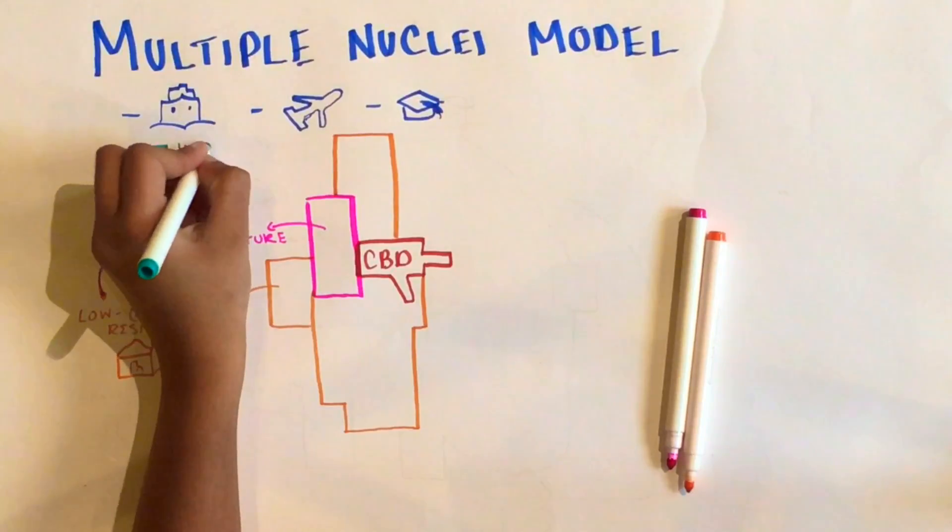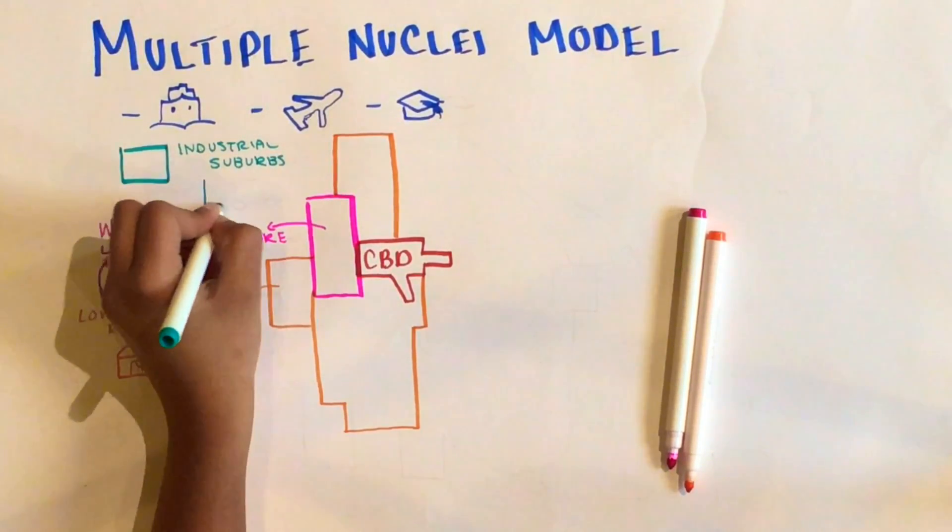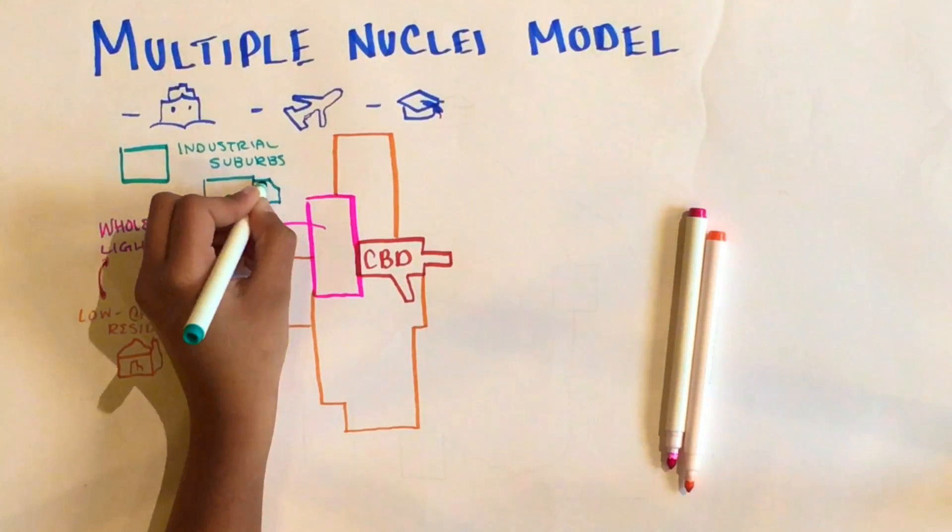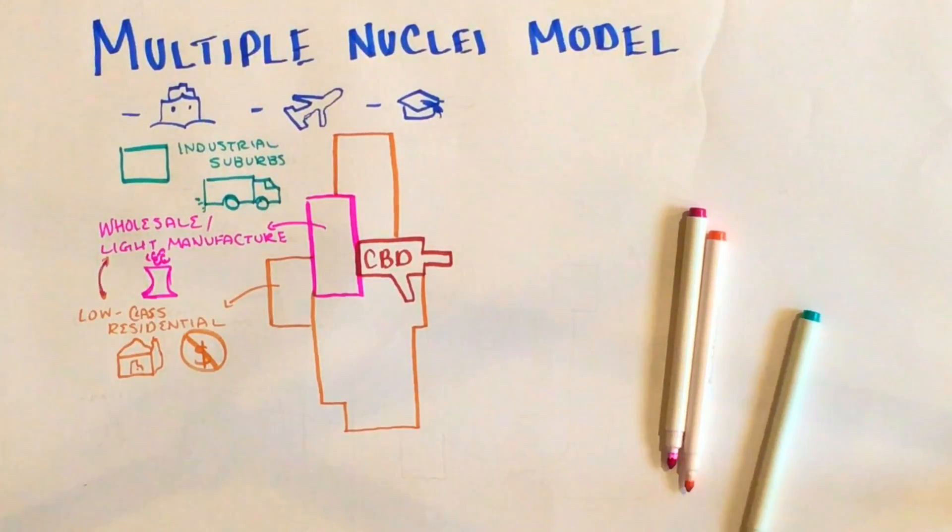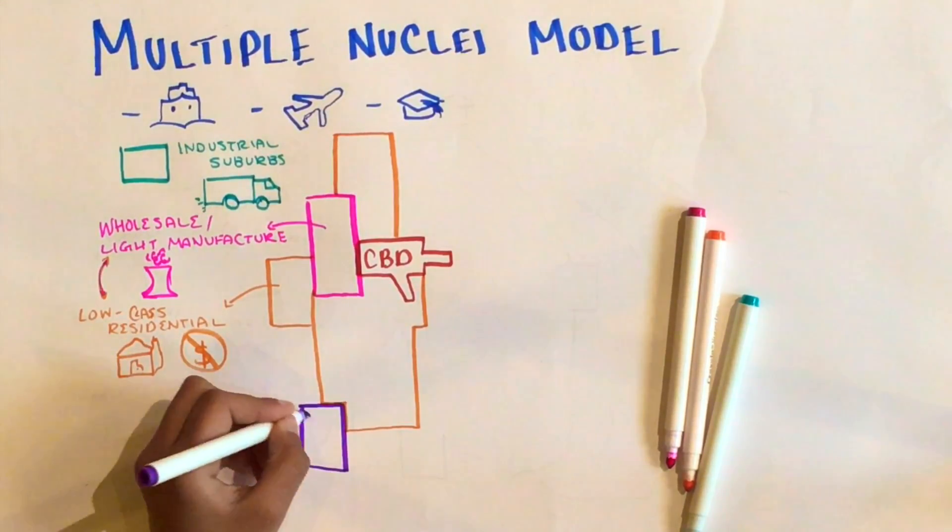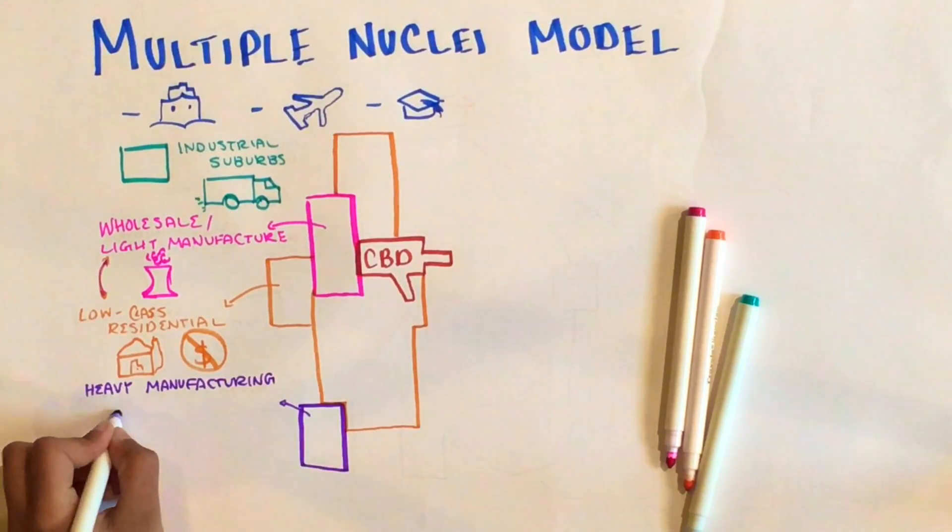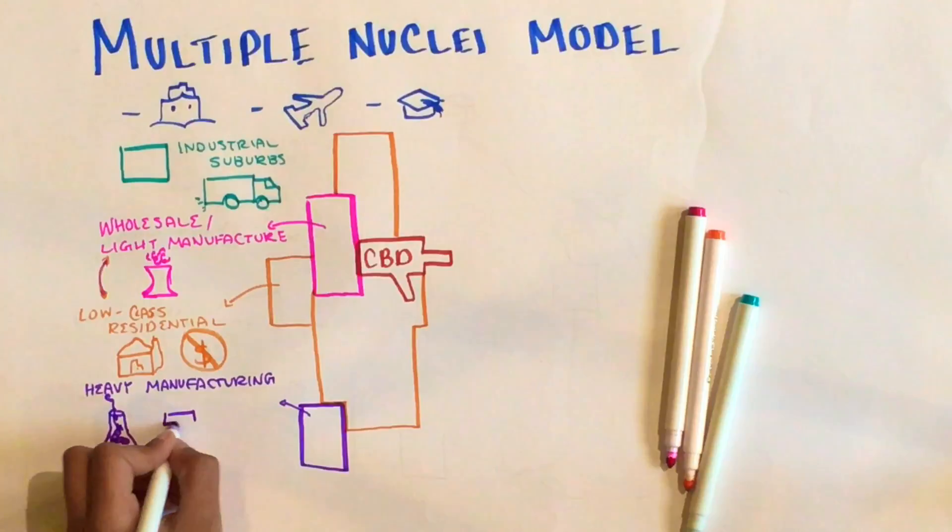Next would be the industrial suburbs, which would mainly get their resources by truck, and its location at the outskirts of the city would limit the pollution it creates. Preceding the industrial suburbs would be the heavy industrial district, which would be limited in its size. This usually produces heavy products like steel and oil, as well as other chemical industries commonly associated with heavy manufacturing.